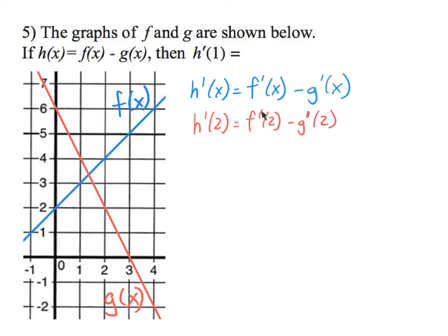We're looking for the slope of f at 2 and the slope of g at 2 and subtract those. From a graph you can quickly do that, especially because it's lines. What is the slope of f? We're going up and over one, up over one. We're going up one over one, so f'(2) equals 1.